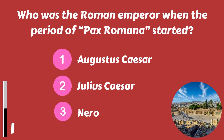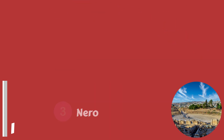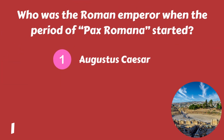Who was the Roman Emperor when the period of Pax Romana started? Augustus Caesar, Julius Caesar, or Nero? It was Augustus Caesar.